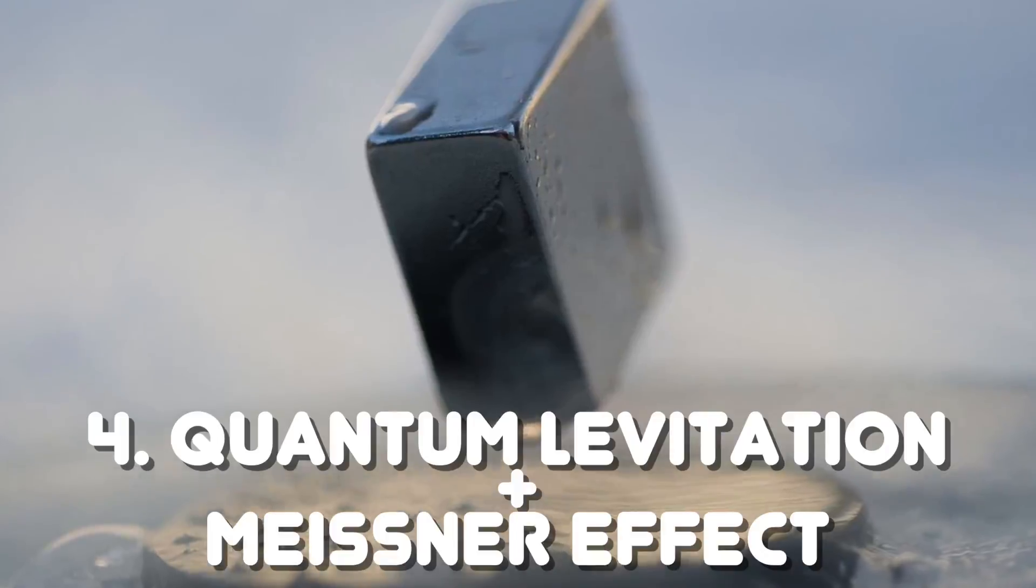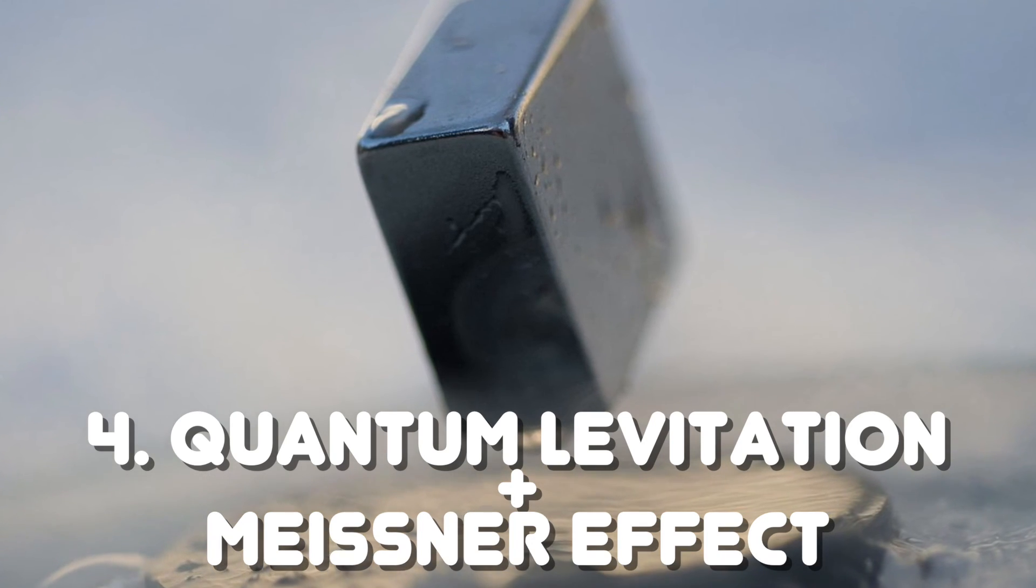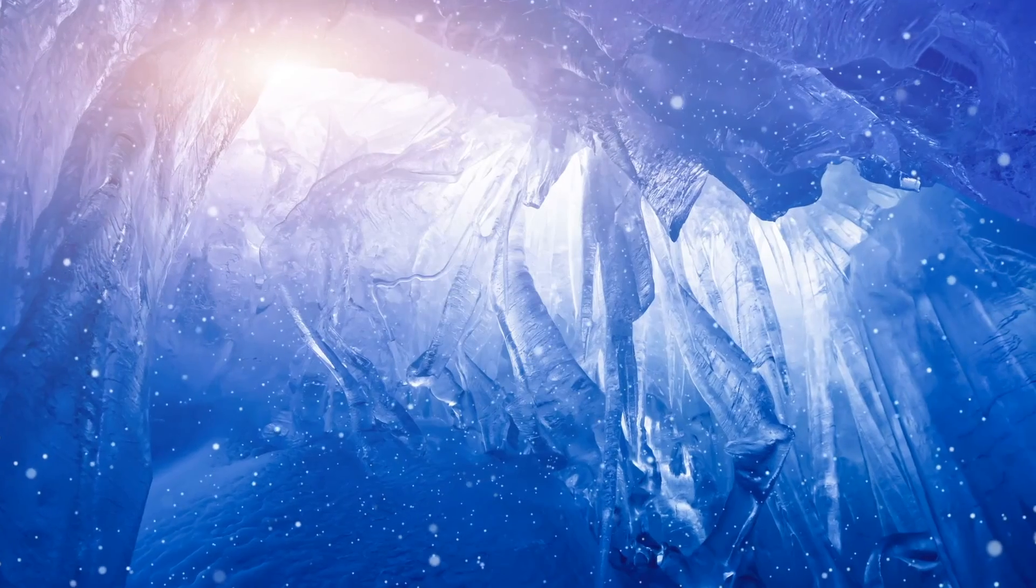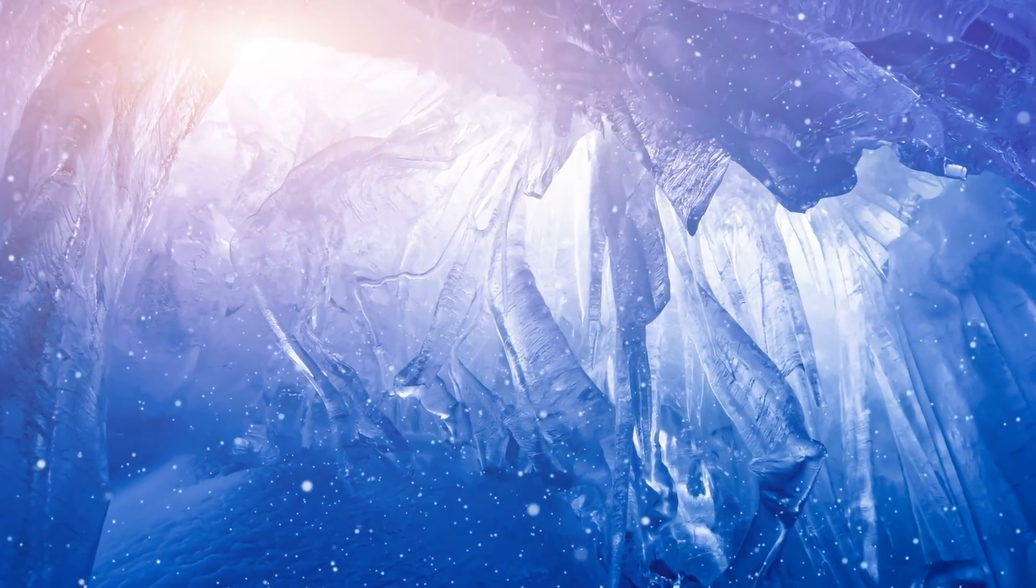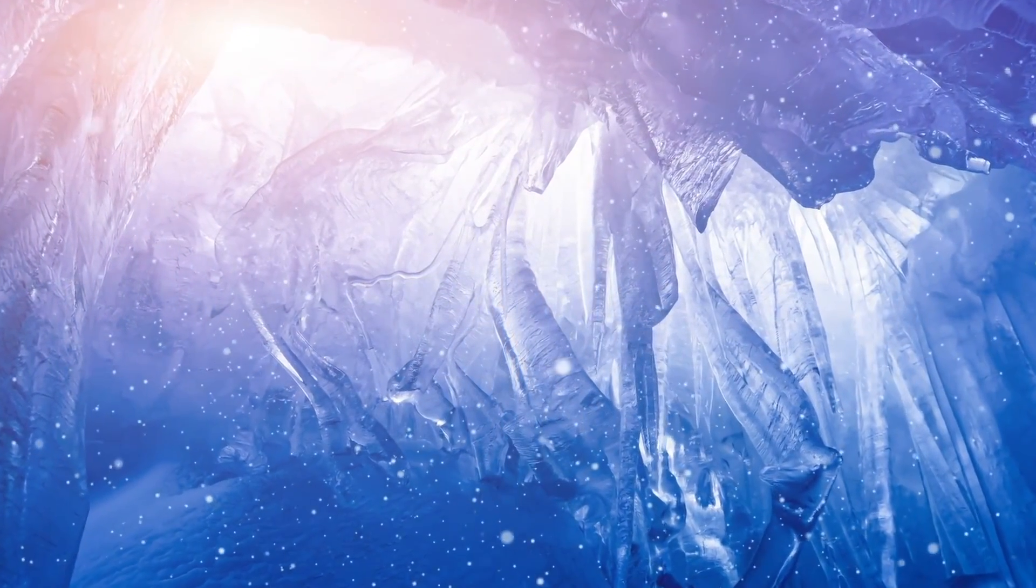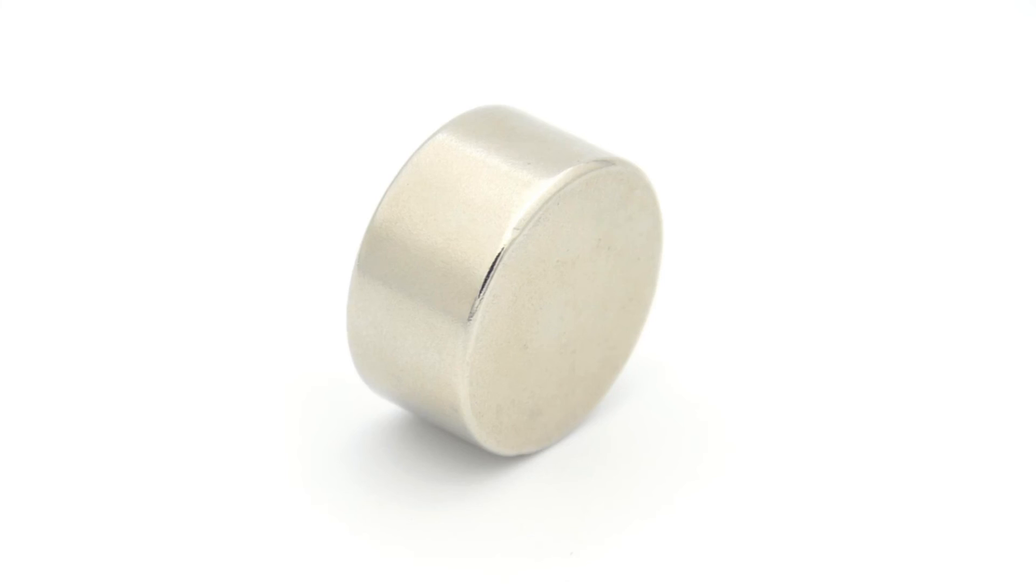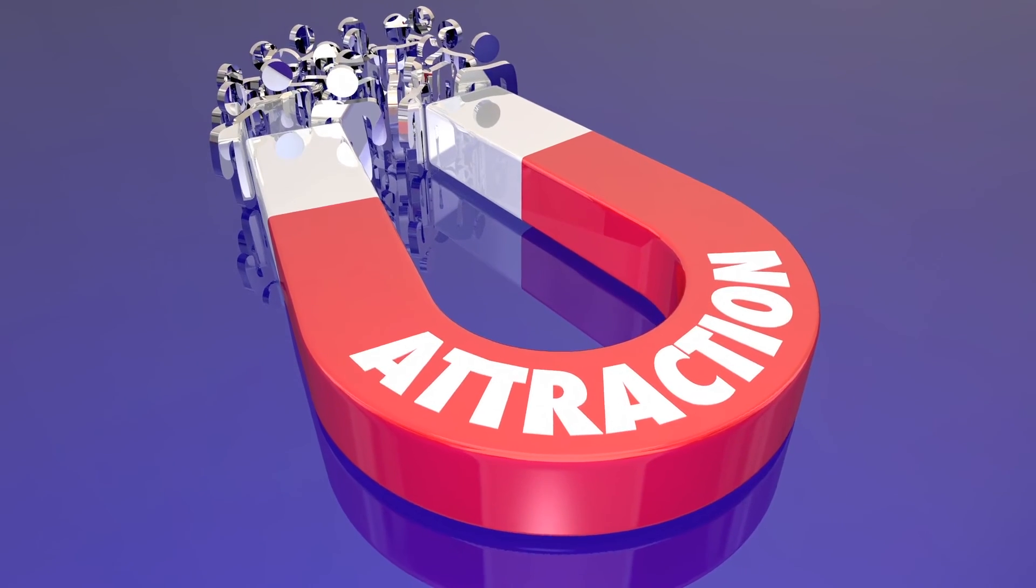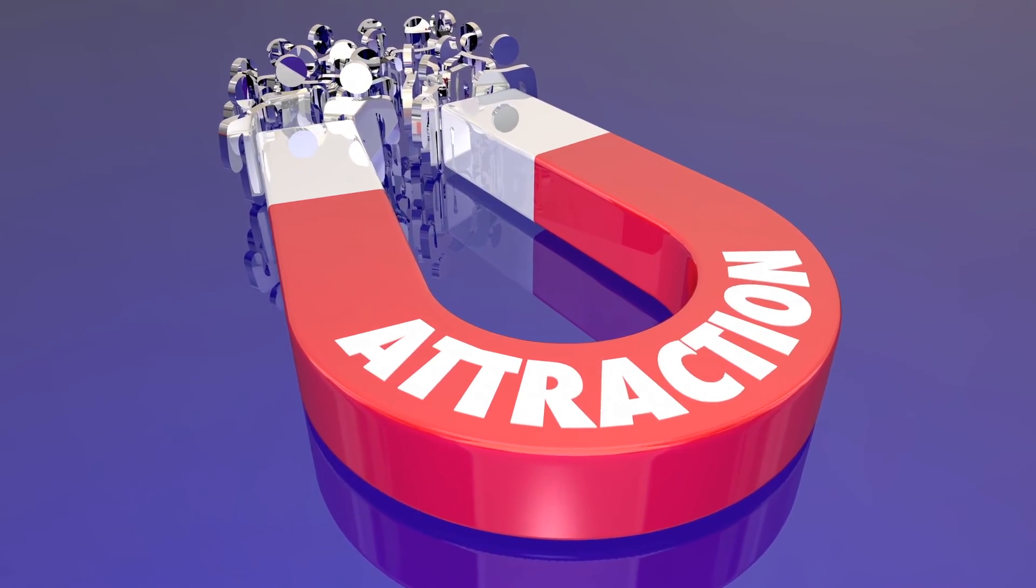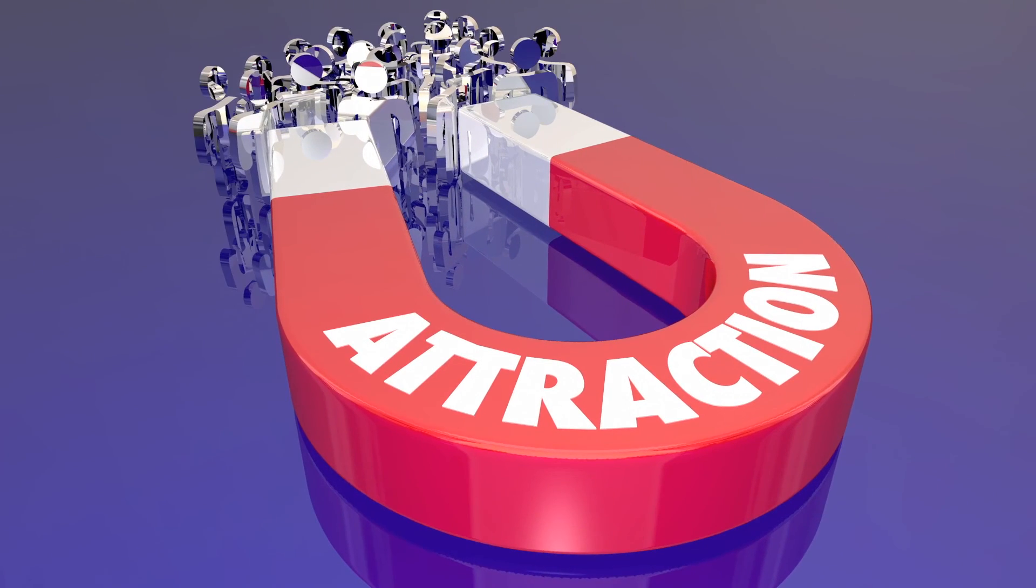Number four, quantum levitation and the Meissner effect. As we have already seen so far in this video, weird things start to happen at very low temperatures. One of these weird effects occurs when you cool down certain metals to temperatures typically below negative 70 degrees celsius. So normally what happens when you put a metal near a magnet is that the magnet will send its magnetic field through the metal, which will attract the metal and bring it towards the magnet.